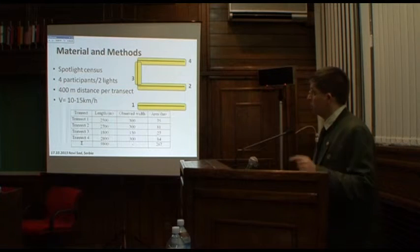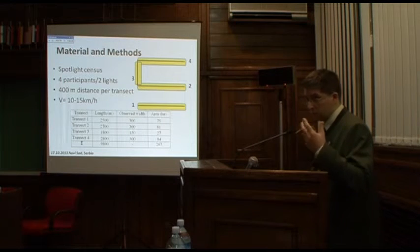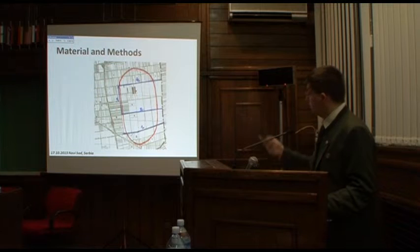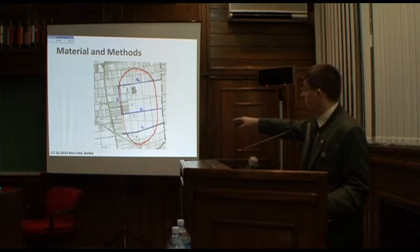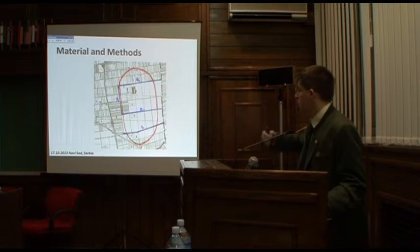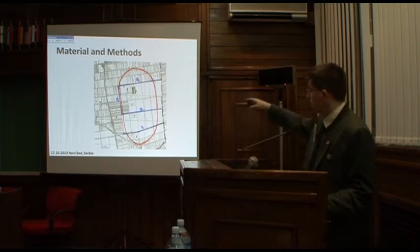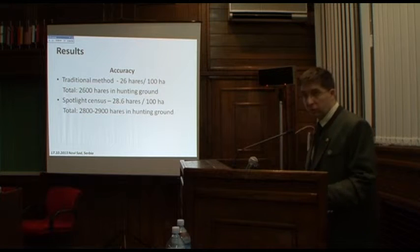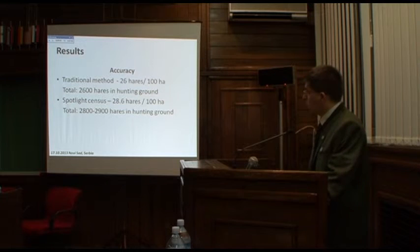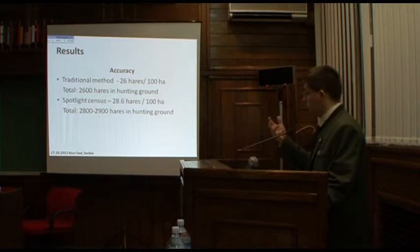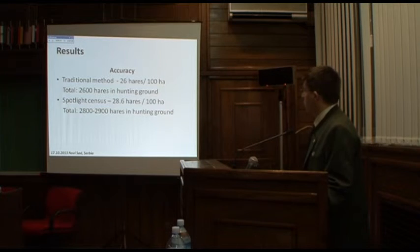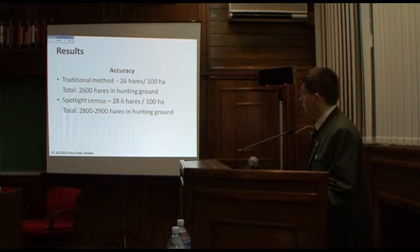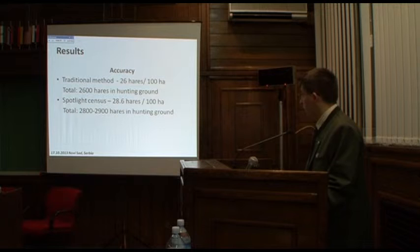The spotlight census method was repeated three times in a row, and the average estimate was used as the final result. The map shows in red the sample plot of the traditional round driven census and in blue the spotlight transects. According to the traditional round driven census, the estimate was 26 hares per 100 hectares, totaling approximately 2,600 hares in the hunting ground, while the spotlight census method estimated a higher number.